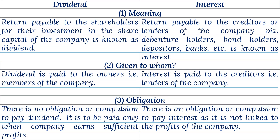Point 2 — Given to Whom: Dividend is paid to the owners, i.e., members of the company. Interest is paid to the creditors, i.e., lenders of the company. Point 3 — Obligation: There is no obligation or compulsion to pay dividend; it is to be paid only when the company earns sufficient profits. There is an obligation or compulsion to pay interest as it is not linked to the profits of the company.